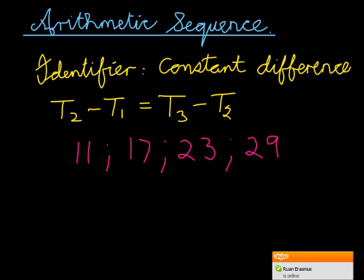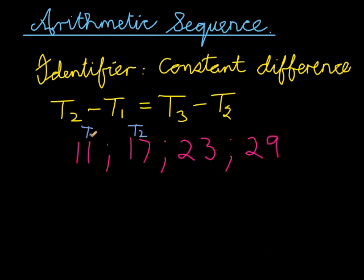Now, you'll notice that when we subtract consecutive terms, in other words terms that follow on top of each other, this is term 2, that is term 1. So when I subtract these 2, 17 minus 11 gives me 6.